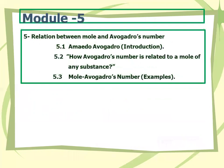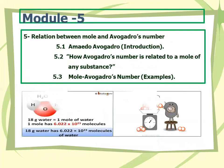Module number five. In module number five, we are going to learn about the relationship between mole and Avogadro's number. In this section, we will cover who Avogadro was, what is the Avogadro constant, how Avogadro's number is related to a mole of a substance, and finally, mole and Avogadro's number.